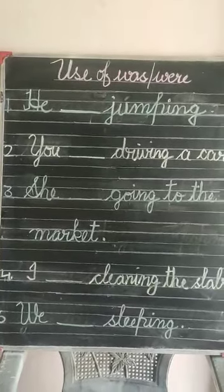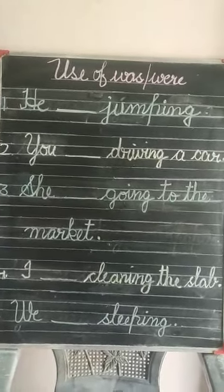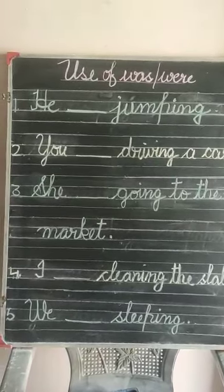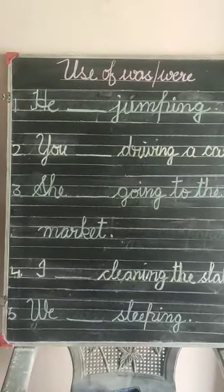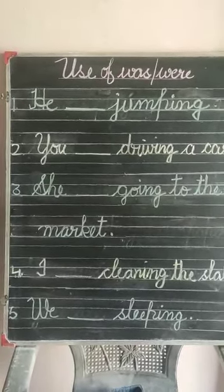Again, keep it in mind: He, She, I — jo singular hain — ke saath was, and We and You ke saath were.